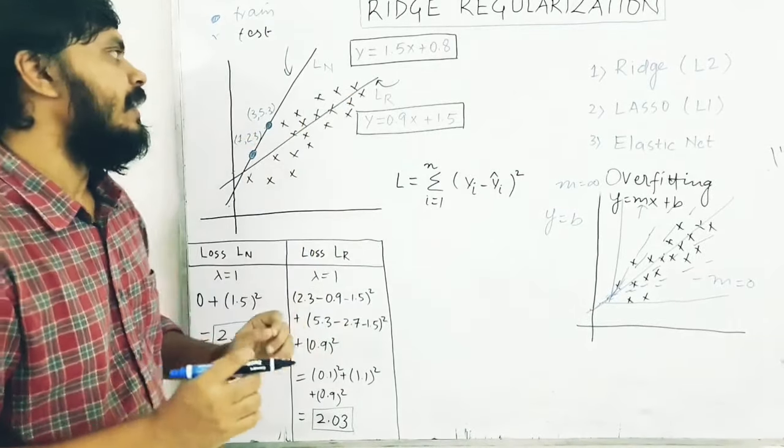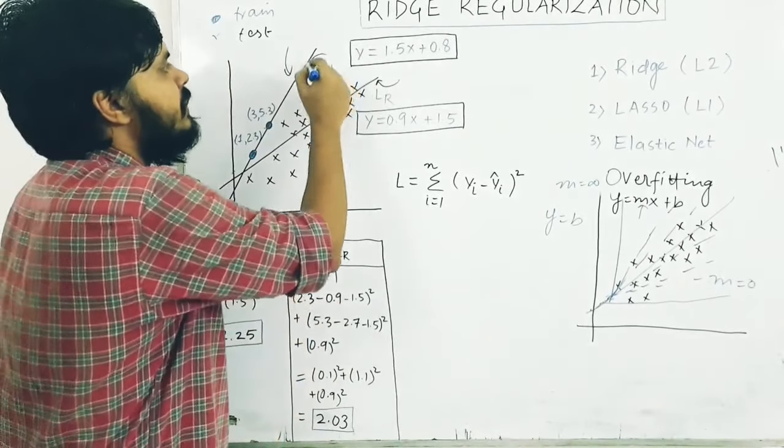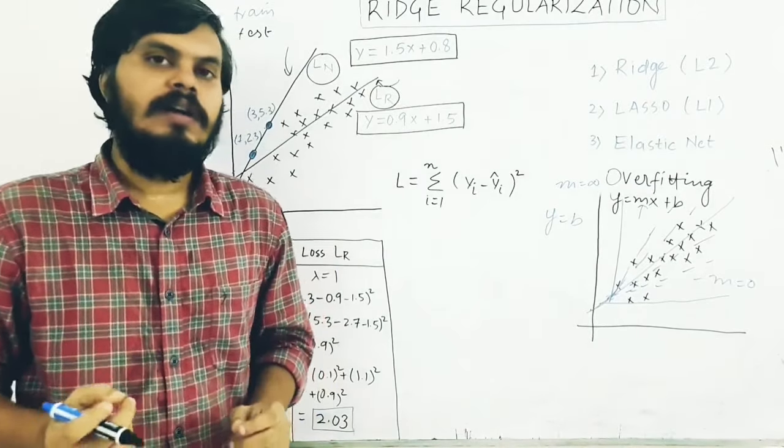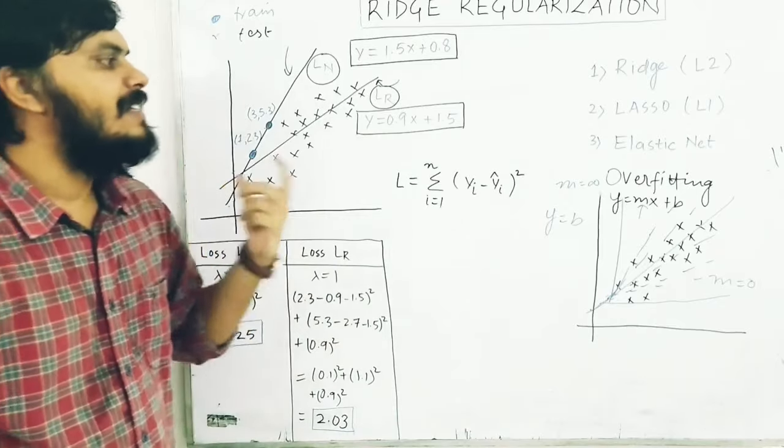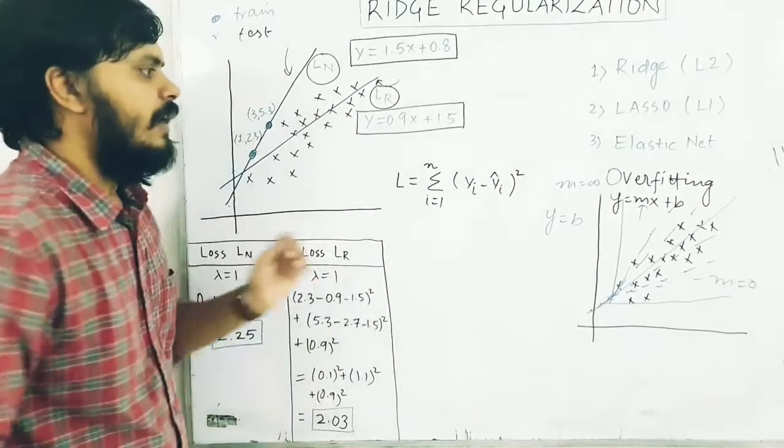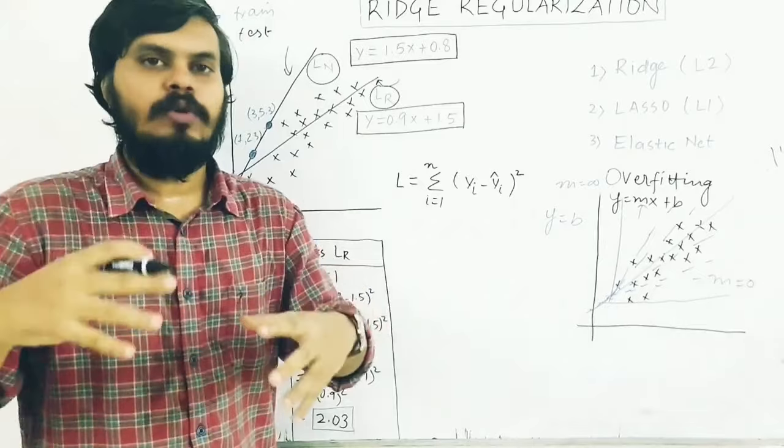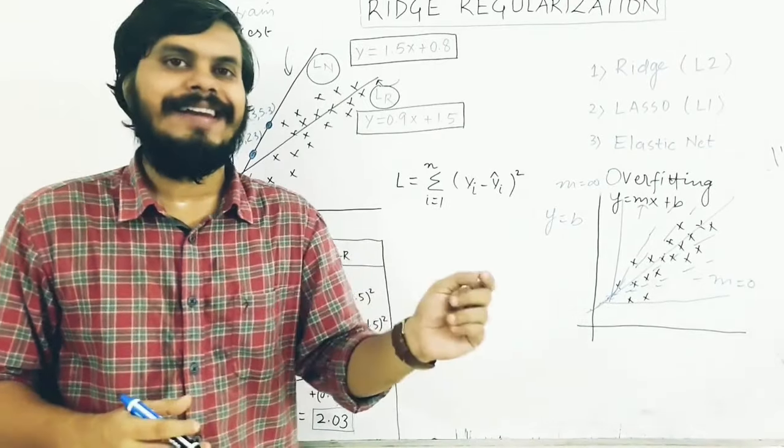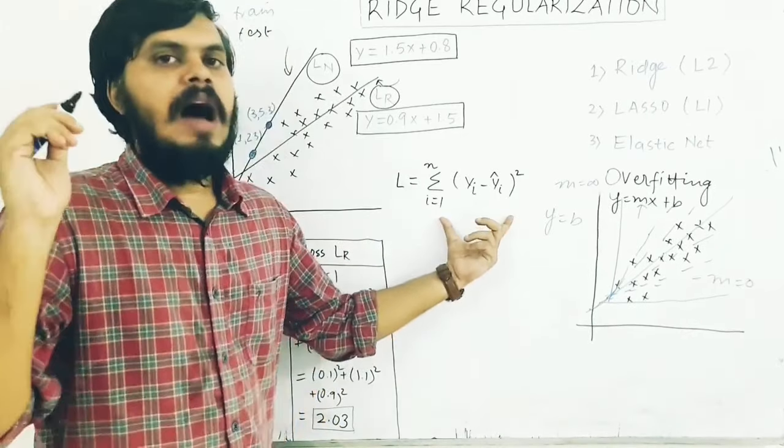So what do I do? In some way, I will convince the machine learning model: don't choose this line, choose this one. This is my goal. And how do I do that? We will see through regularization. You already know how we select lines - you have to minimize this error: the sum of squares of actual value and predicted value.